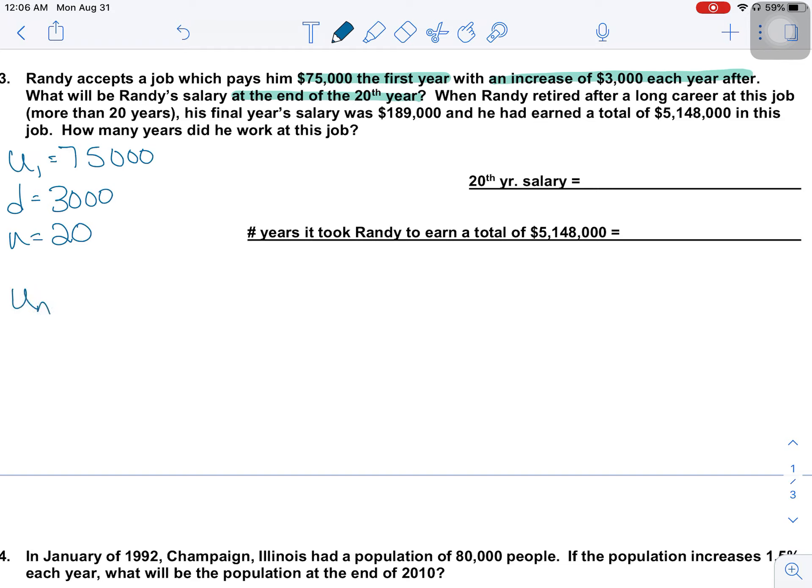So let's find U sub 20 here. U sub 20 is equal to U sub 1 plus N minus 1 times D. There's a big difference between a $300 raise and a $3,000 raise. I promise. So after working for 20 years at the same place, $3,000 increase every single year, he is going to make $132,000.